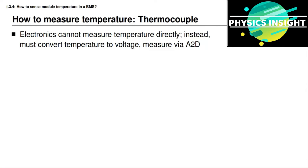In the previous lesson, you learned how a battery management system can measure voltage using an analog-to-digital converter. It turns out there is no circuit that can directly measure temperature. Instead, we must convert temperature into a voltage that's related to that temperature, and then measure the voltage using an analog-to-digital converter. In this lesson you will learn about two different technologies for measuring temperature.